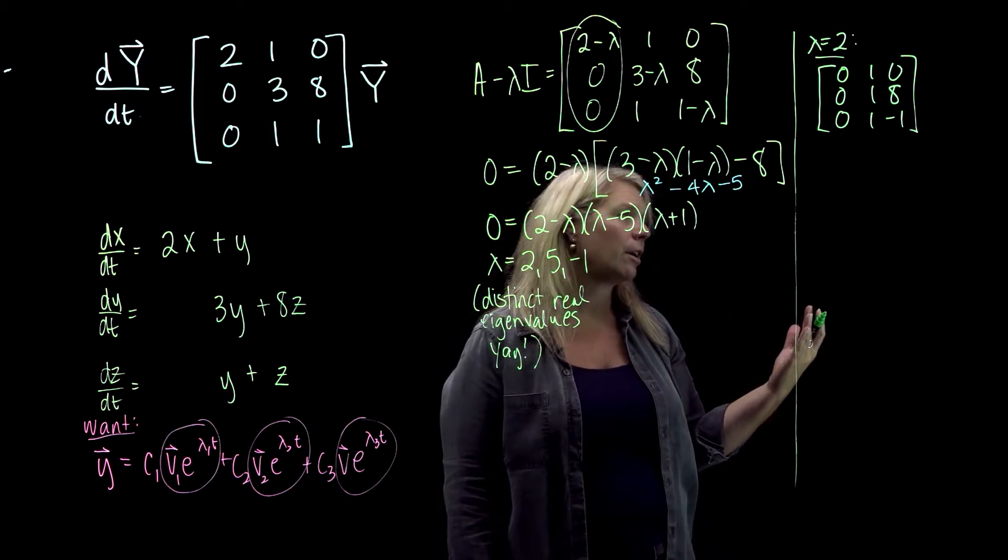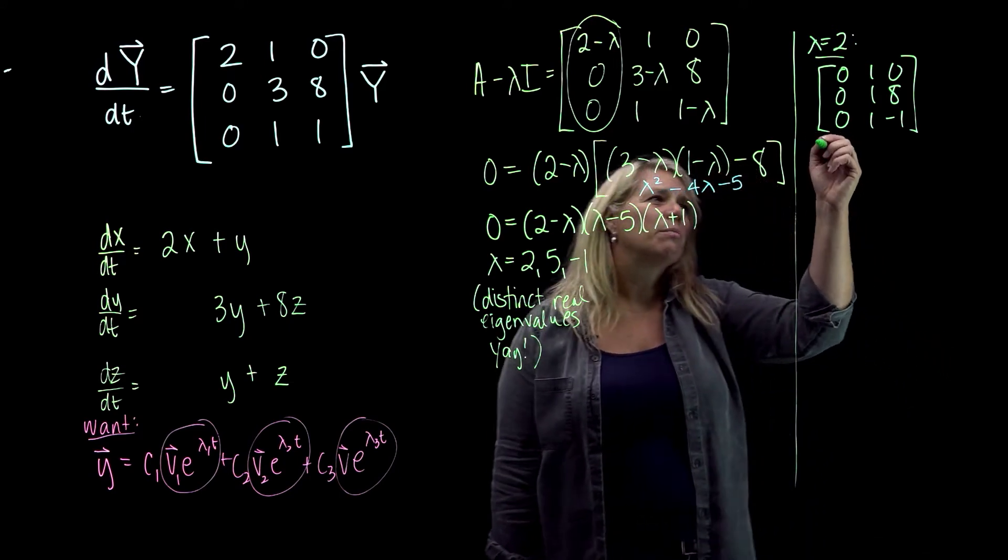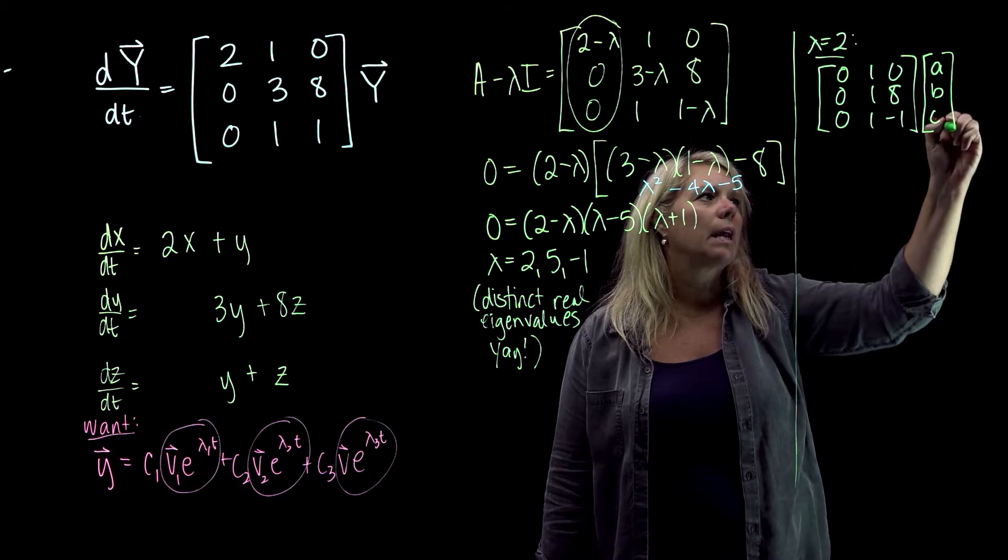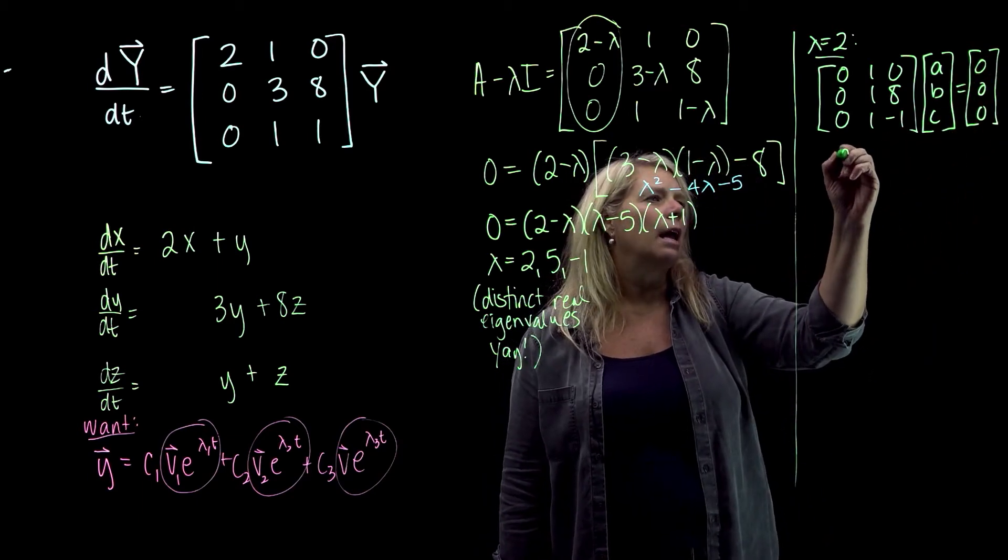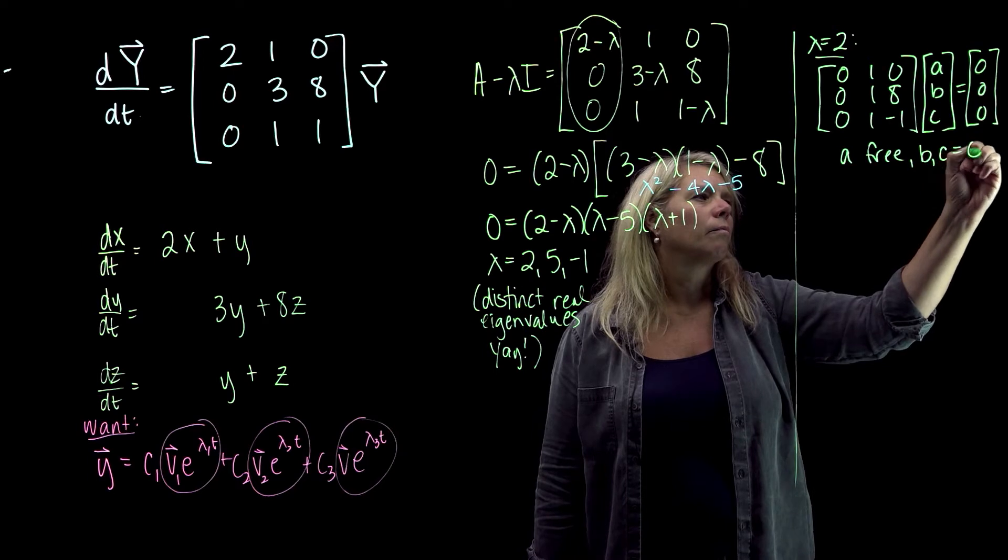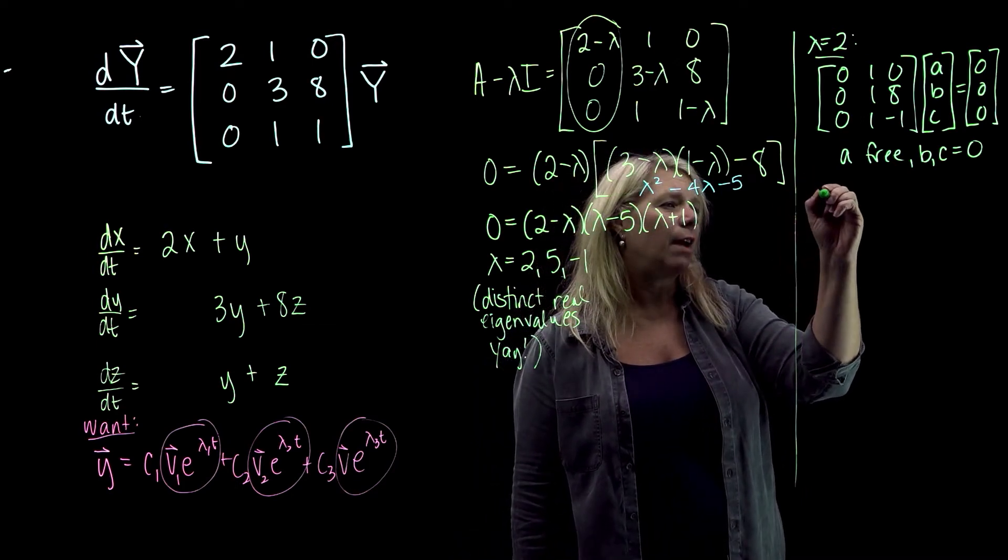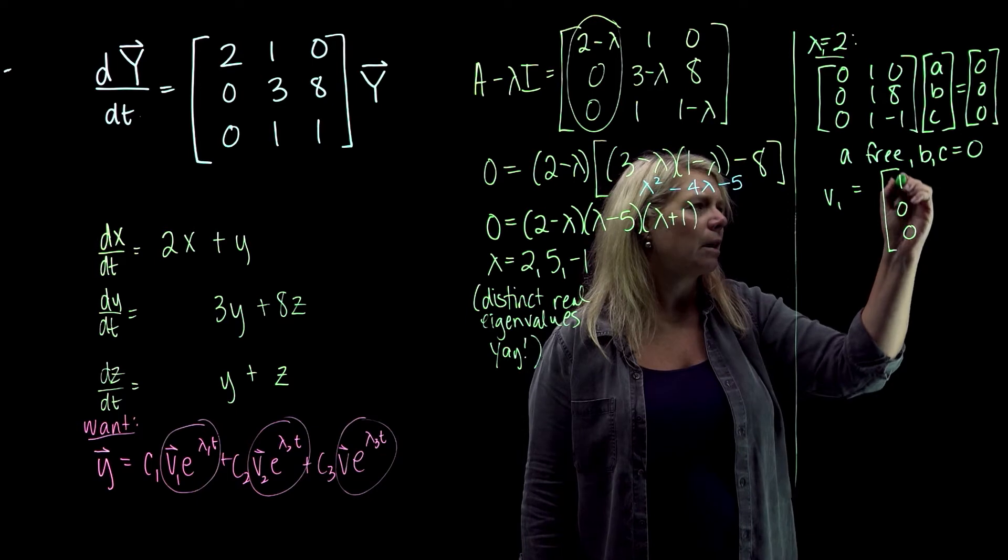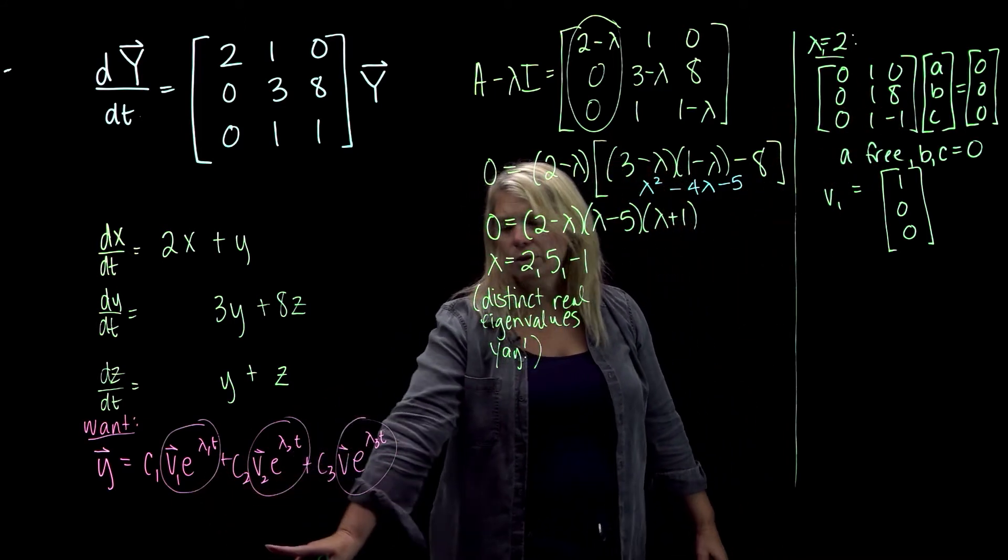So you should be able to see that if you make a system of equations where you have this matrix times a vector of unknowns ABC and set that equal to the zero vector and solve for that, you should get that A is a free variable and B and C will be zero. Alright, so kind of thinking about the reduced row echelon form of what you're going to get from that. Alright, so you'll end up with an eigenvector. So this will be my v1 that goes with my lambda 1. A can be anything, B and C have to be zero. So this generates all the solutions for this null space. And then I can use that to write my solution for the differential equation.